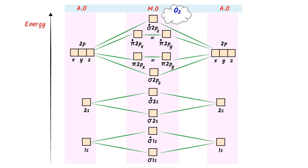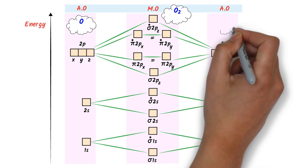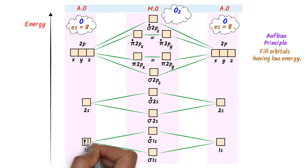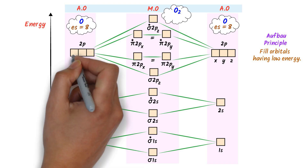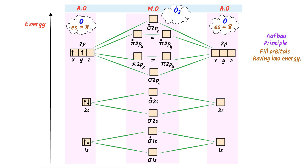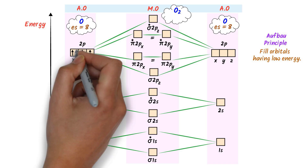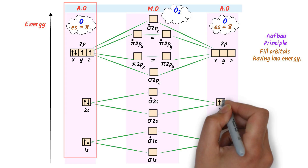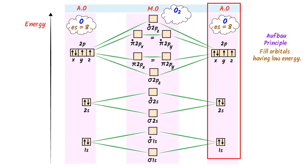Now consider the oxygen molecule, which has two oxygen atoms. I write one oxygen atom on the left and one on the right. The atomic number of oxygen is 8, so each oxygen atom has 8 electrons. According to the Aufbau principle, low-energy orbitals are filled first: 1s gets 2 electrons, 2s gets 2 electrons, then 1 electron each in 2px, 2py, 2pz, and 1 more in 2px. I copy this electronic configuration to the right-hand side for the second oxygen atom.